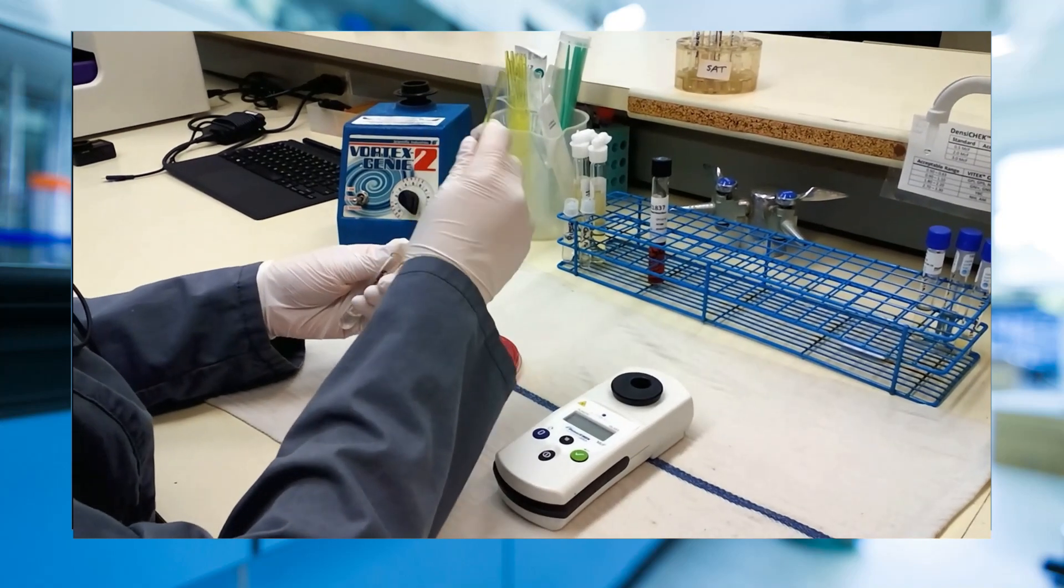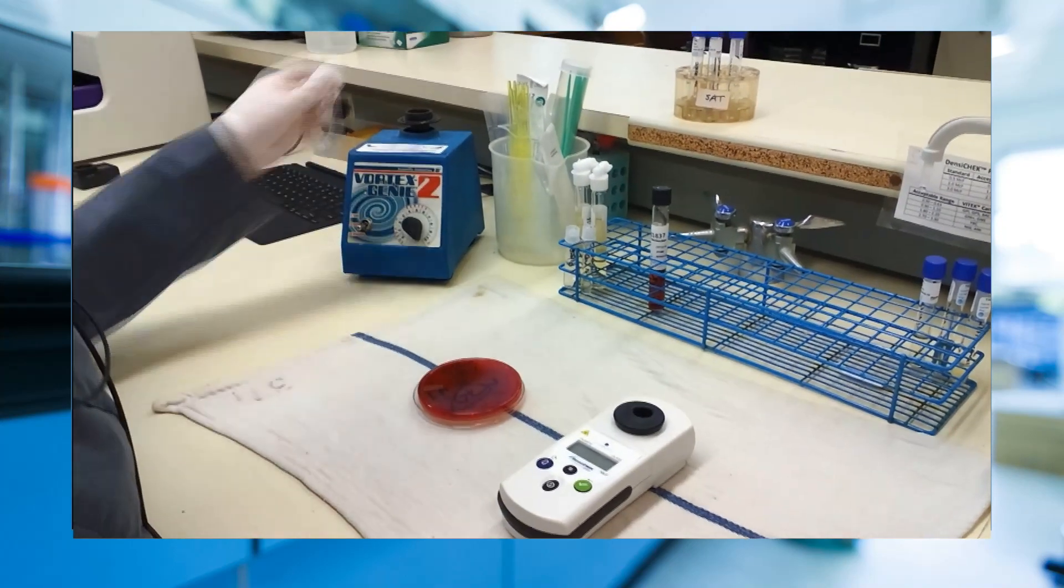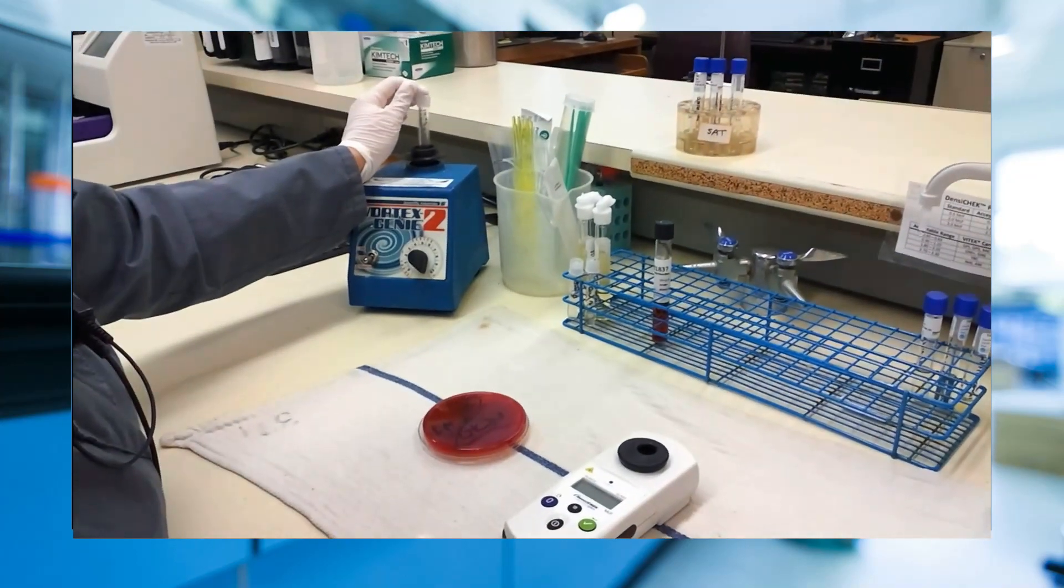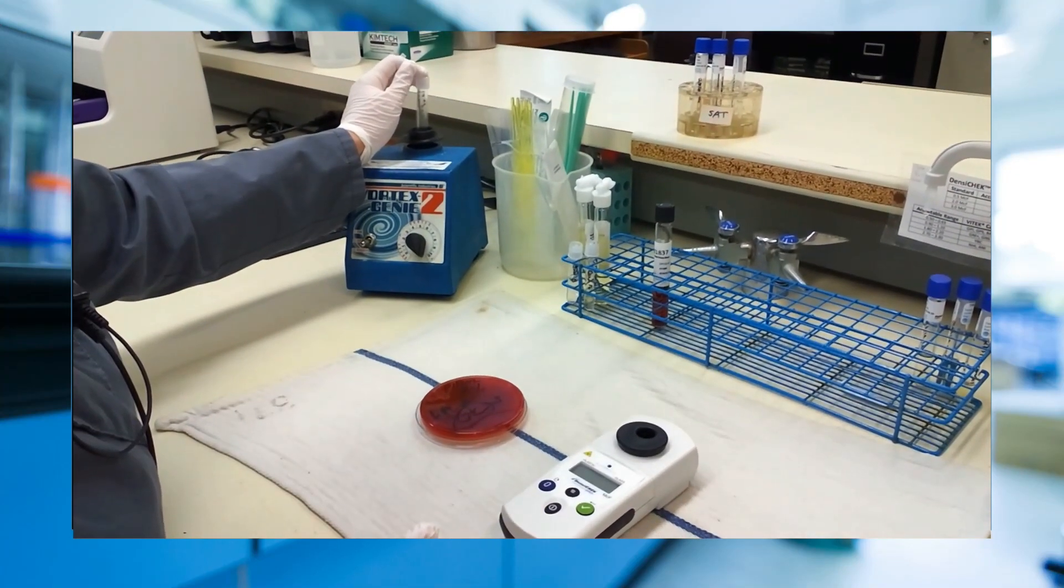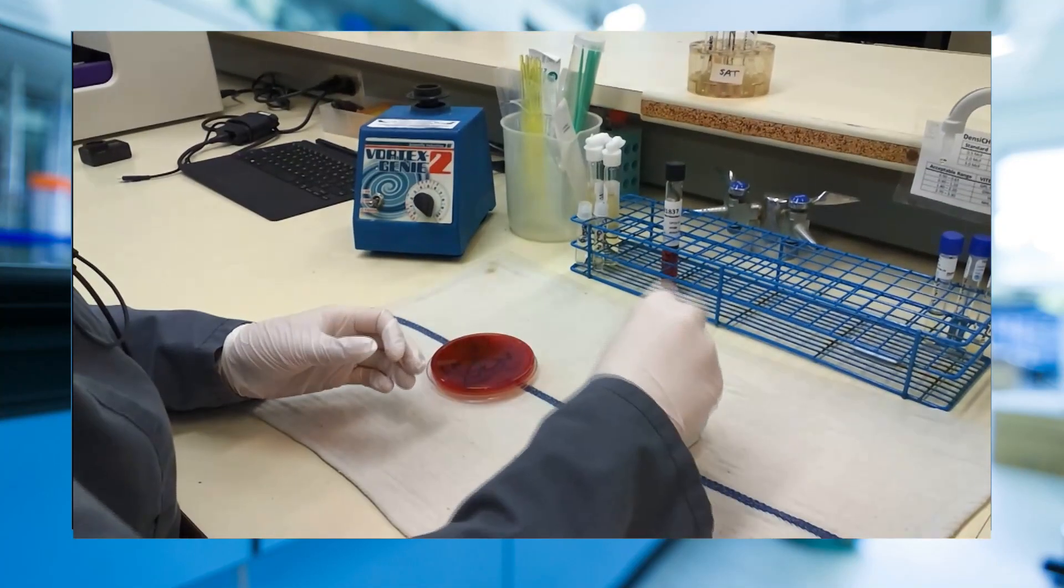First, the bacterial isolate to be tested is added to a tube of saline to reach a standard concentration. Then a set volume of this suspension is added to a tube of broth medium.